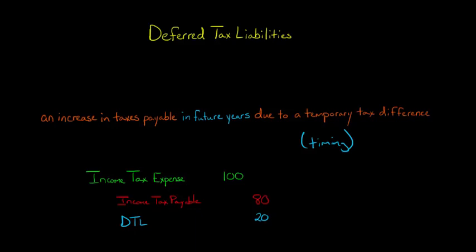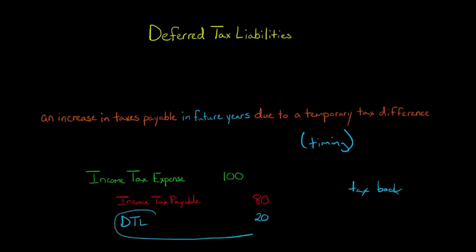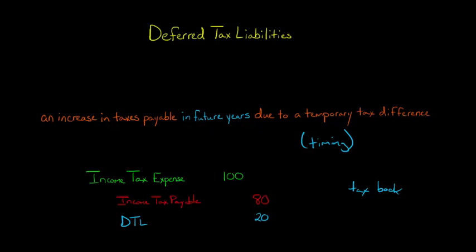The reason this might occur is you might be depreciating on an accelerated basis for tax, but doing straight-line depreciation for book purposes. So in the first year, the tax you pay is lower than your tax expense, and you make this deferred tax liability entry to recognize that at some point in the future, this is going to reverse. Temporary tax differences reverse because it's just a timing difference.